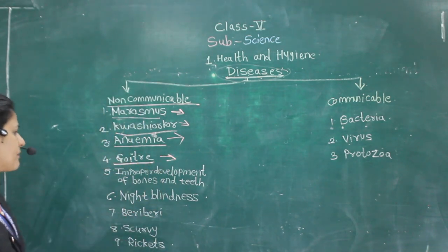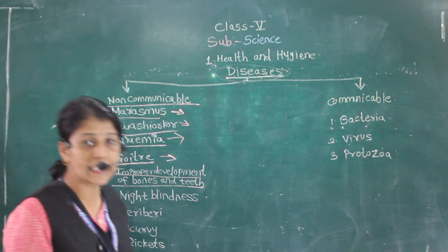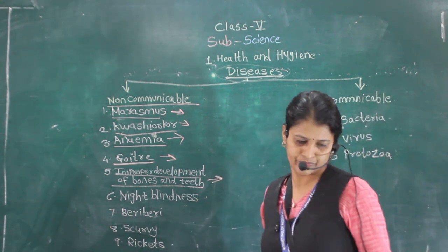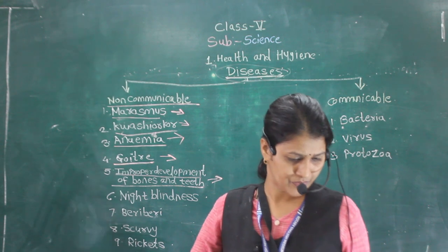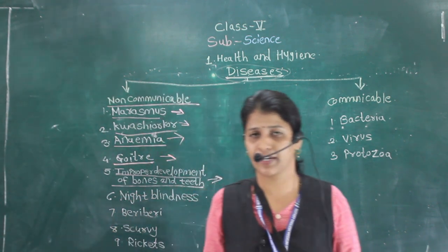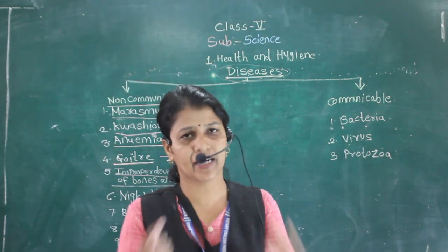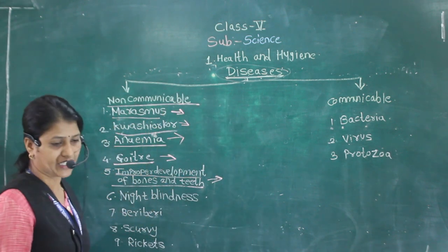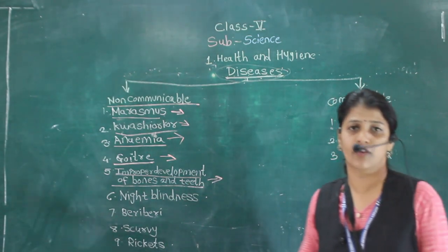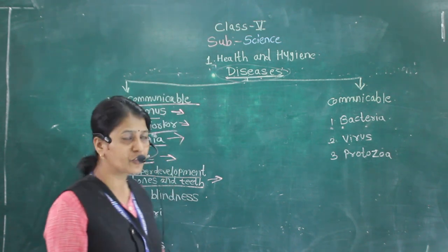Next is improper development of bones and teeth, caused due to the lack of calcium. The bones and teeth become weak and brittle and can break easily. If a child is suffering from this, they should be given milk, vegetables like carrot, fruits and pulses.